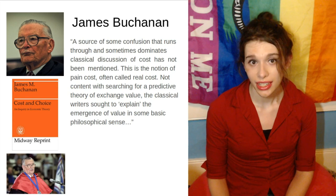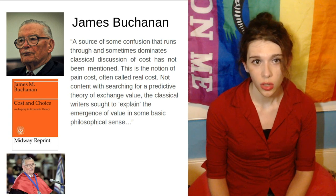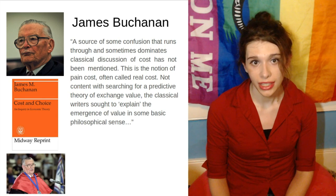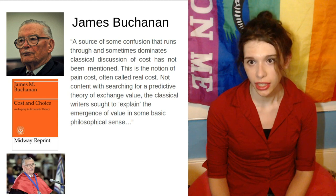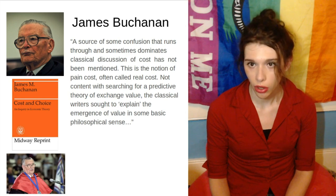James Buchanan is an influential Chicago school economist who wrote, among many things, Cost and Choice, which is his critique and view of economic theory. He also won a Nobel memorial prize in economic sciences for his work in the economics of politics. We'll come back to that in a future video on political economy, but today I want to go over Buchanan's critique of real cost.